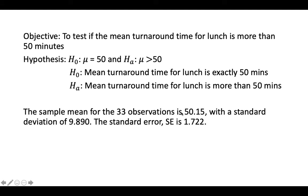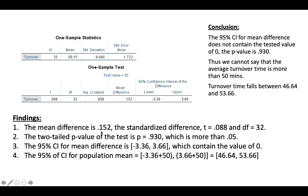Sample mean for the 33 observations is 50.15 with the standard deviation of 9.89. The standard error is 1.722. As you can see, mean difference is 0.152. Standardized difference is 0.88 and df is 32. The two-tailed p-value of the test is more than 0.05, equals to 0.93. When it is insignificant, when it is not significant, you have to write the real value of the p. When it is significant, then you just write it as p-value is less than 0.05 or p-value is less than 0.001. The 95% confidence interval for mean differences is negative 3.36 and 3.66. So it's a negative and positive, so it contains 0, hence explaining why our test is not significant. 95% confidence interval for the population mean is you just add the lower bound with the hypothesis value and then you're going to get 46.64 and 53.66.